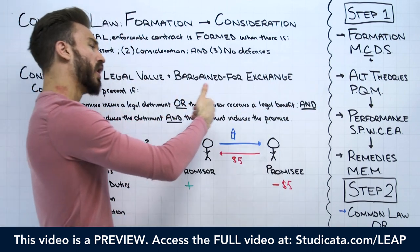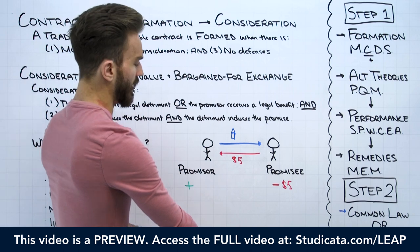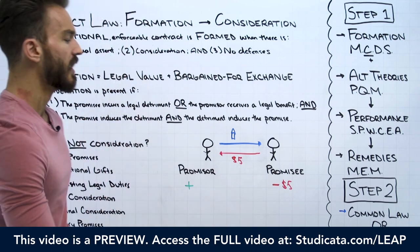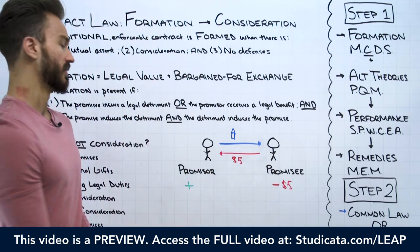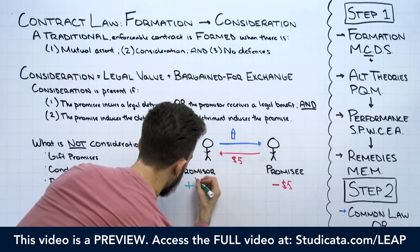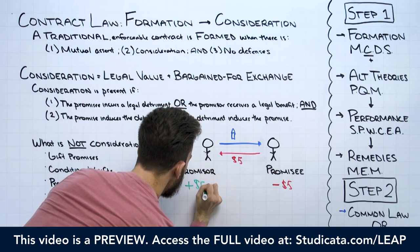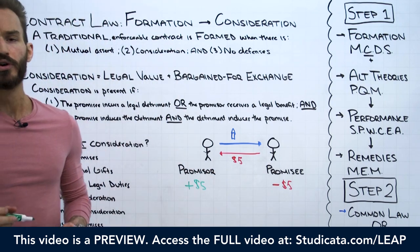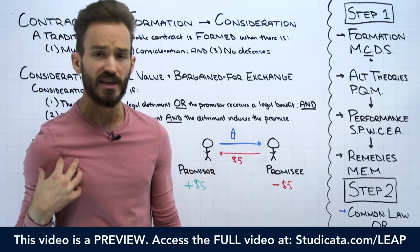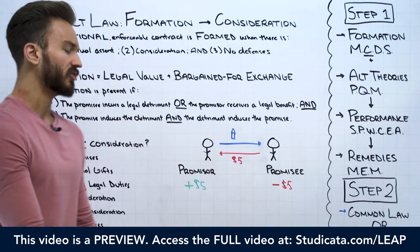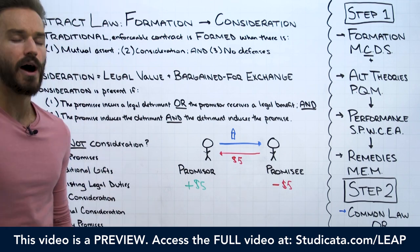Has the promisor received a legal benefit? Obviously, the promisor — me — is receiving the $5. So I am receiving the benefit of $5, and I'm not otherwise entitled to this $5. So I'm clearly getting a $5 benefit.